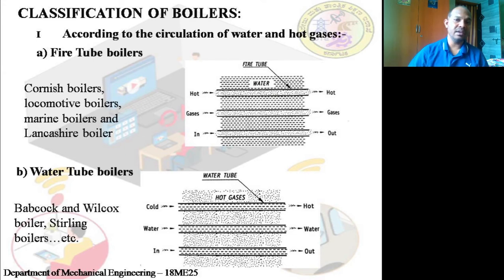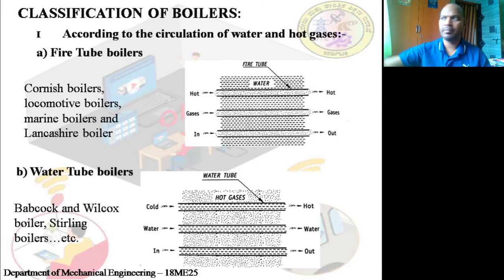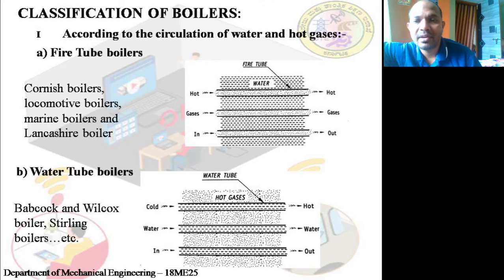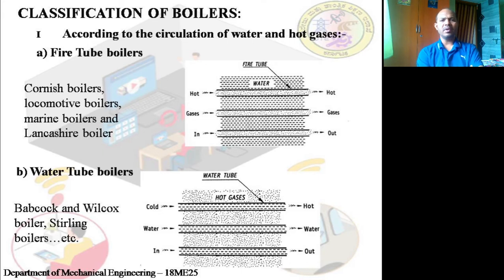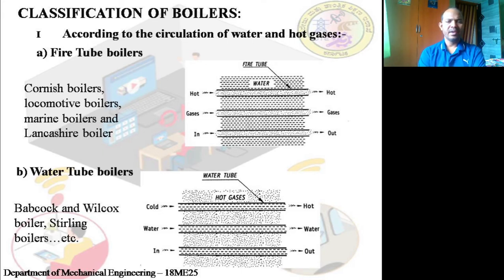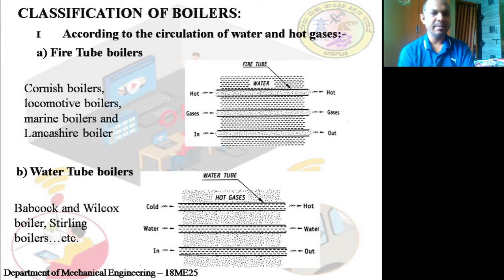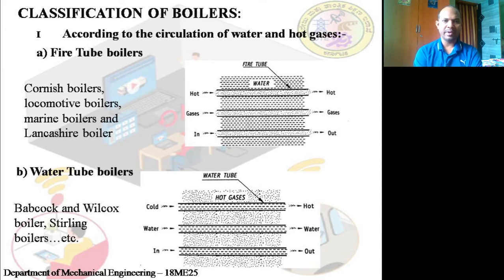Now let's look at the classification of boilers. One major classification is based on the circulation of water and hot gases — also called the principle of working. In that category, boilers are classified as fire tube boilers and water tube boilers.